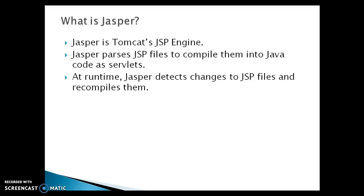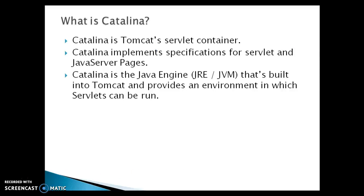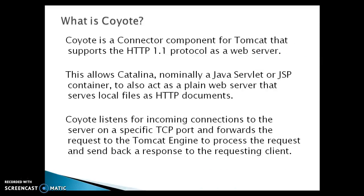Now the next question: what is Catalina? Catalina is Tomcat's servlet container. Catalina implements the specification for servlets and Java Server Pages (JSP). Catalina is a Java engine — or you can say JRE or JVM — that is built into Tomcat and provides an environment in which servlets can run.